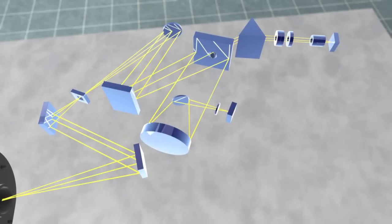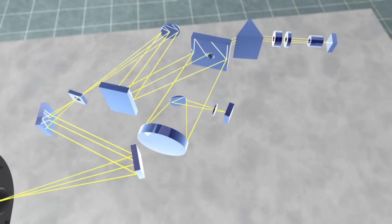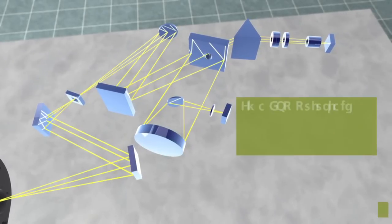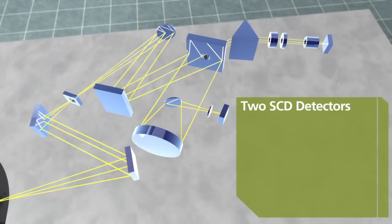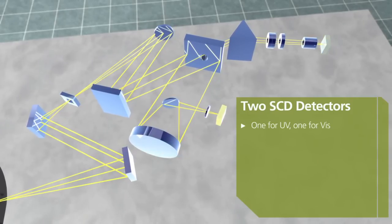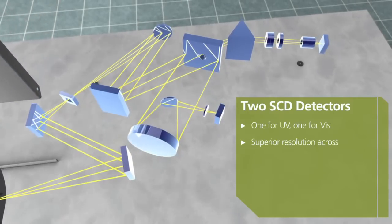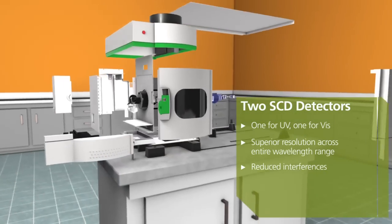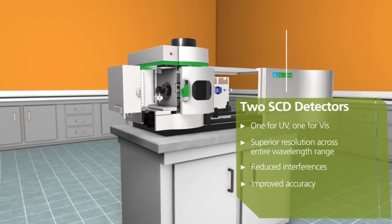As an added benefit, the Optima 8300 measures all wavelengths simultaneously using two specialized detectors, one for UV, one for visible, further enhancing sample throughput, reducing interferences, and improving accuracy.